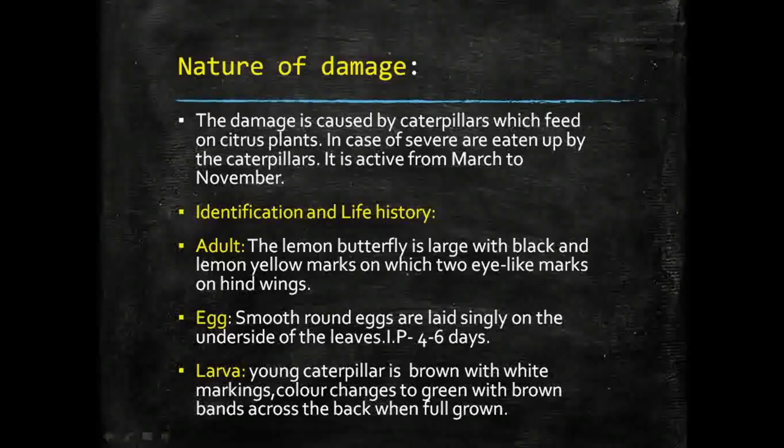The main damaging stage of this pest is the caterpillar, which severely attacks plant leaves and eats them up. It is active during March to November, as those conditions are favorable for its growth.